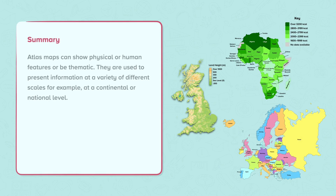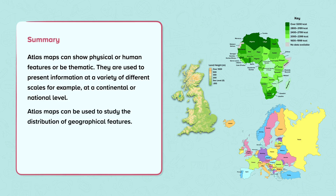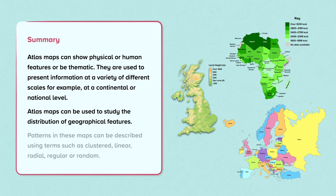Summary: Atlas maps can show physical or human features or be thematic. They are used to present information at a variety of different scales, for example at a continental or national level. Atlas maps can be used to study the distribution of geographical features. Patterns in these maps can be described using terms such as clustered, linear, radial, or regular or random.